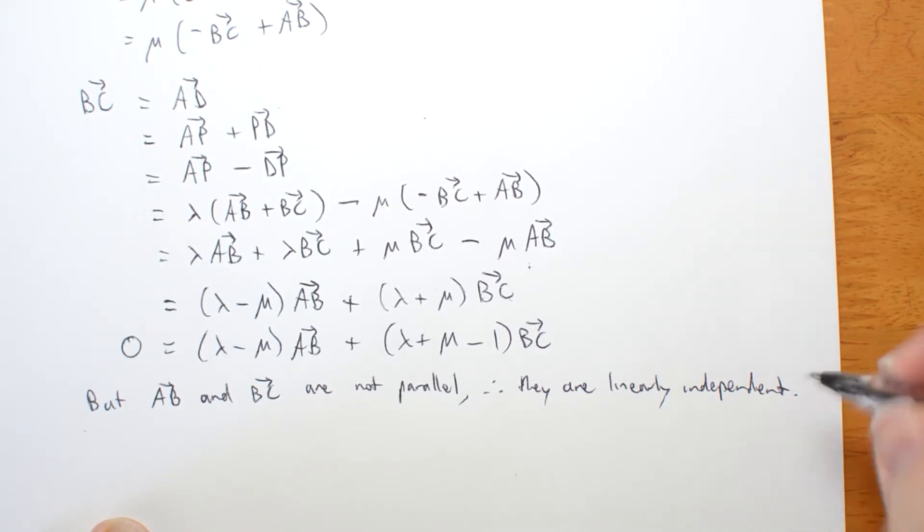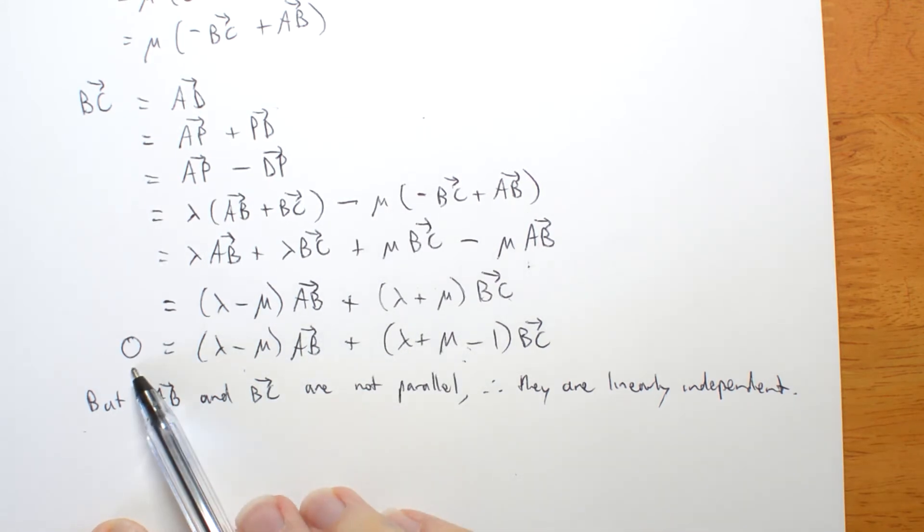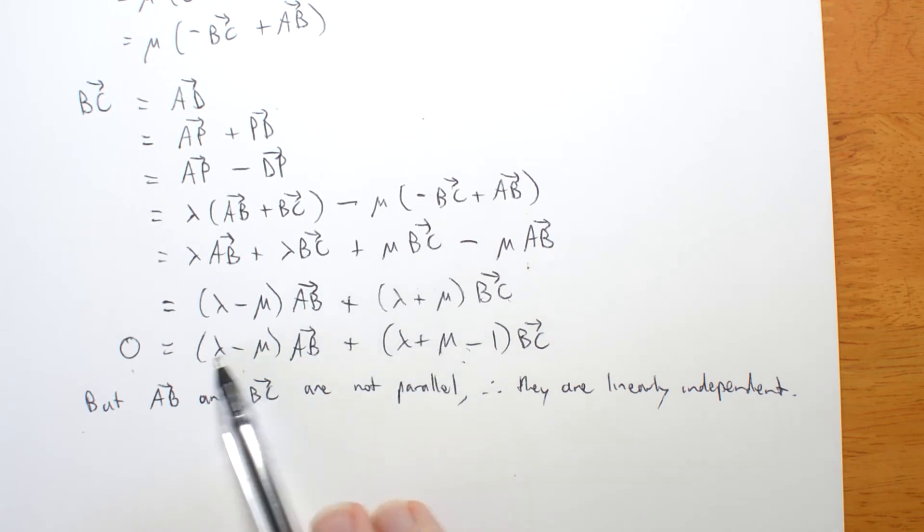And if they're linearly independent, then a linear combination of them that's equal to zero means that the two coefficients here must both be zero. That's what linear independence means.